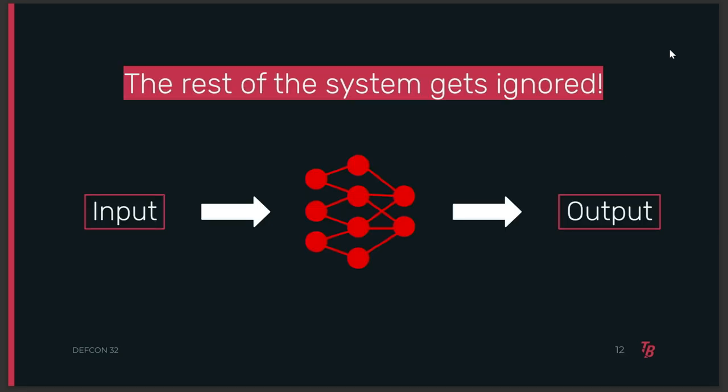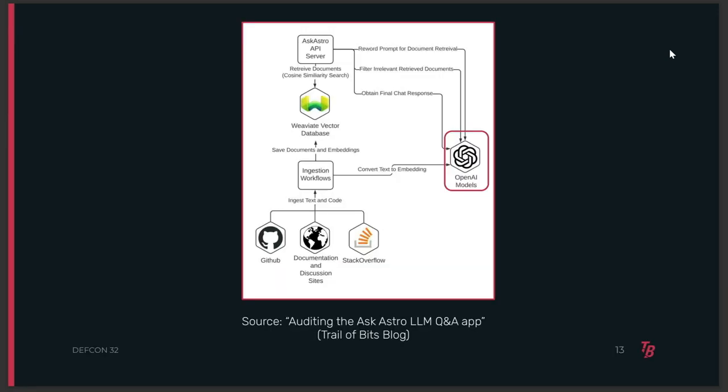For the most part, many attacks and attack frameworks restrict their analysis to this formulation: an ML model receives an input and produces an output. But this isn't an accurate representation of what an ML system actually looks like. Here's a software architecture diagram for an ML system reviewed by Trail of Bits recently — a system that uses the Ask Astro tool for RAG. I've circled where the model actually is in this photo. Do you see what I mean? We need to be looking at all of this holistically.